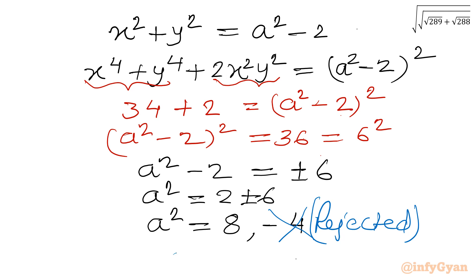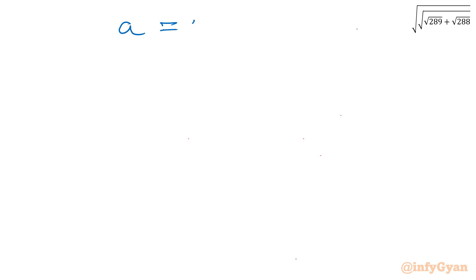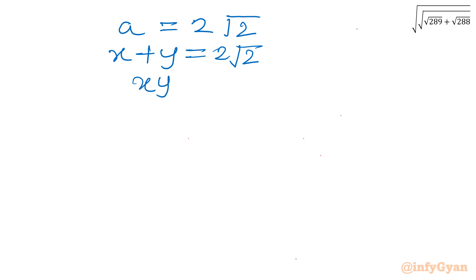For real solutions, a squared equals 8. Taking square root: a equals plus or minus 2 root 2. Since condition on a was a is always greater than 0, we reject the minus sign — rejected. So a equals 2 root 2. Since a was our substitution x plus y, we have x plus y equal to 2 root 2 and xy equal to 1.